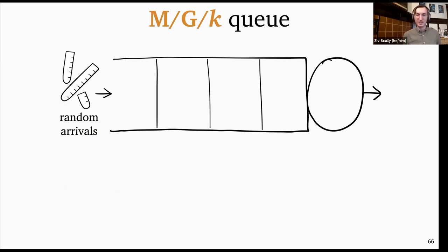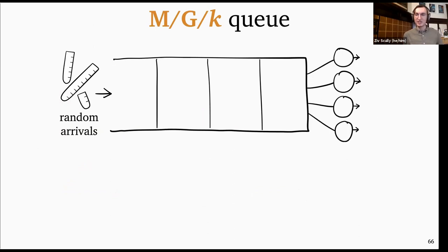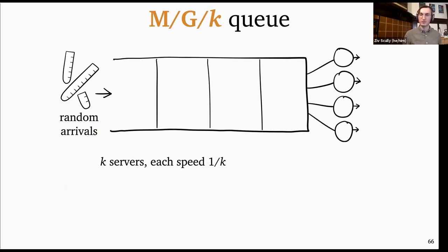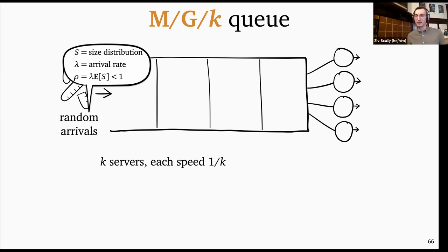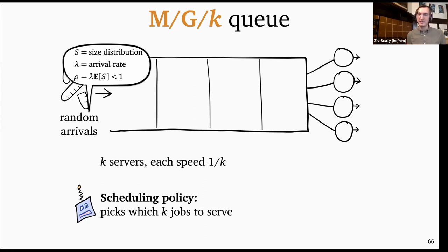We can still think about SRPT and Gittins in this system. Multi-server Gittins would serve the K jobs with the K lowest ranks. Multi-server SRPT would serve the K jobs with the K least remaining sizes. So the big question is: are SRPT and Gittins good policies in the MGK? We don't know what the optimal policy is for the MGK. We might still hope to show that SRPT and Gittins are near optimal.